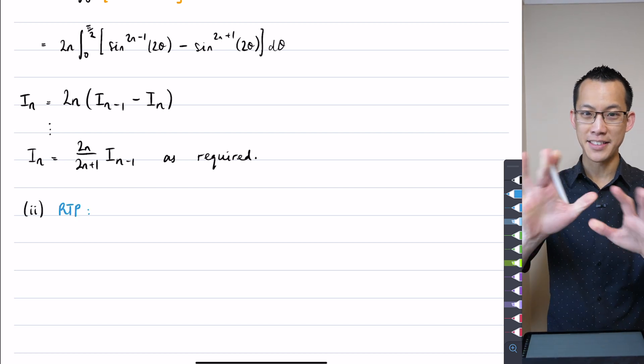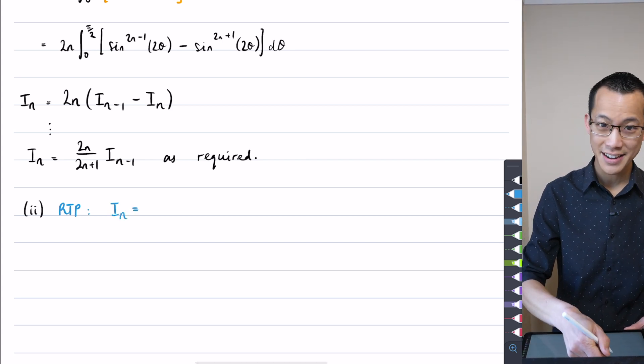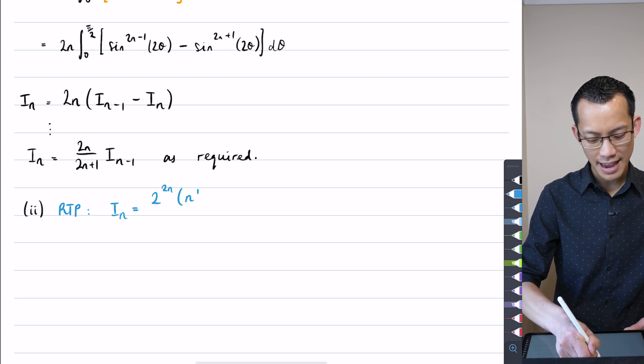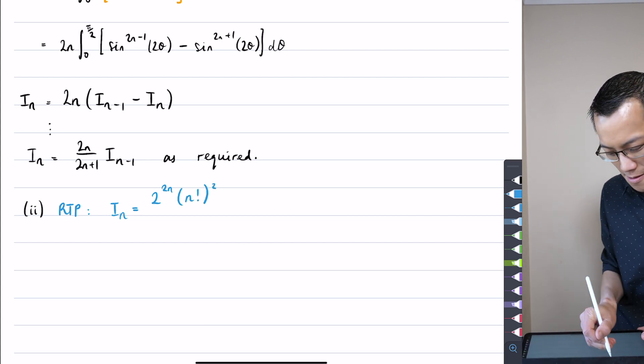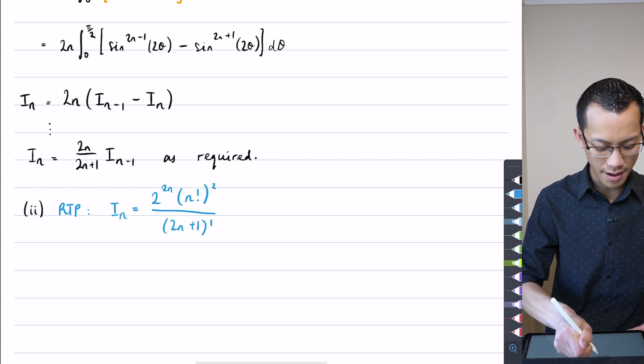We're required to prove this weird looking result. I'm going to talk about it in a second to give you that same nudge that I gave you before. Okay, here's what we were required to prove: In equals 2 to the 2n times n factorial squared all divided by 2n plus 1 factorial.